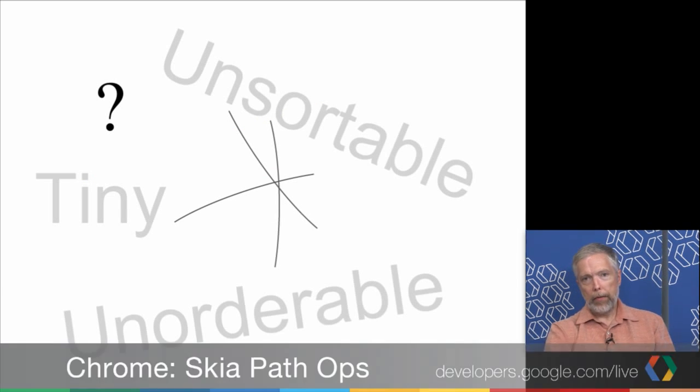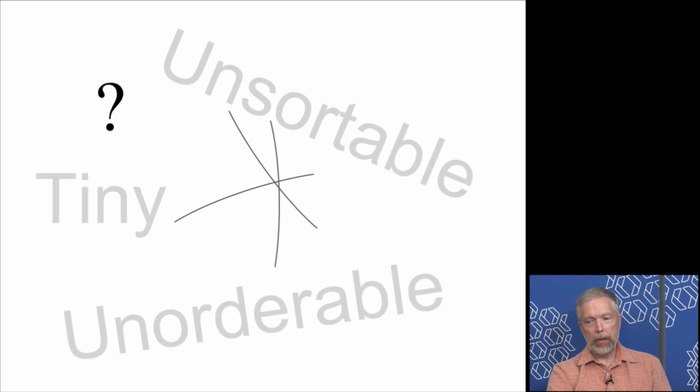This means that for a lot of computation, I need just to decide that the answer is just unknowable. It may be unsortable, it may be tiny, or it may be unorderable. But I can't necessarily compute what the answer is for an intersection. To solve this in the general case, I simply find another intersection that I do know and propagate that answer back to the intersection that I don't know.